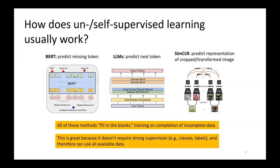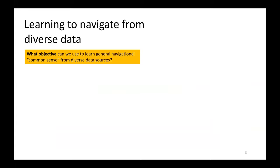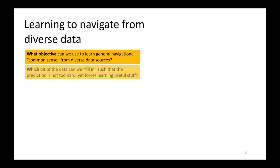So that's what we're going to do for navigation. The objective that we're going to formulate is to complete parts of navigational trajectories. We can complete them by actually filling in raw sensory observations, but that's pretty hard because it's a very high-dimensional completion problem — and a lot of what you end up figuring out when completing observations is not actually all that useful, like the shape of the clouds in the sky. So we're not going to do that. We're going to actually complete actions and temporal distances.